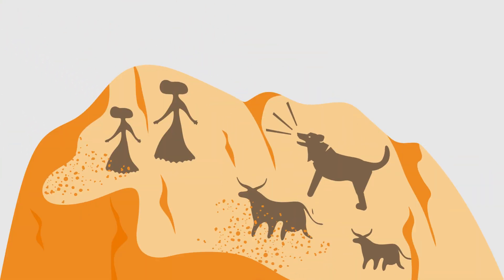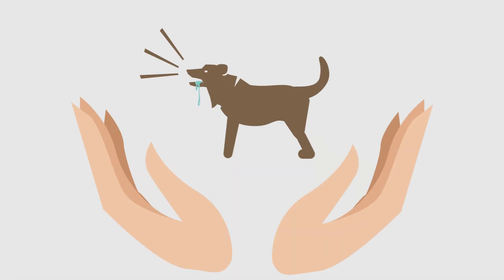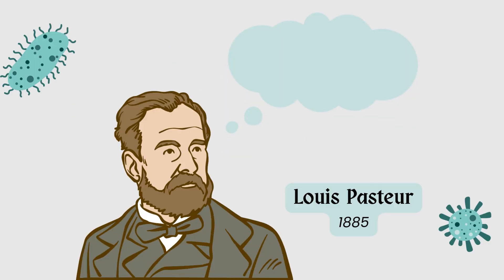While there have been documented cases of rabies for over 4,000 years, prevention and treatment strategies remained largely faith-based until the late 19th century, with the discovery of the first rabies vaccine.